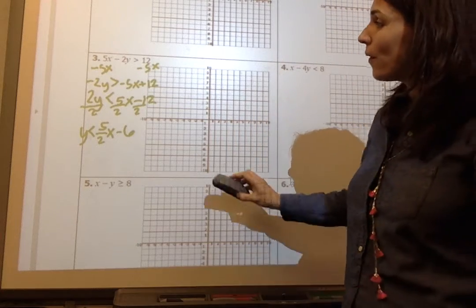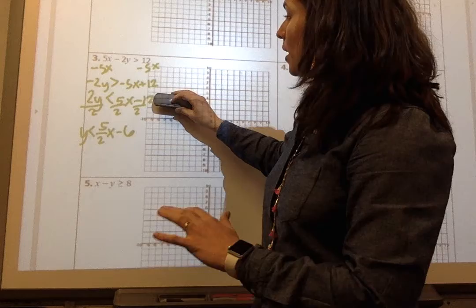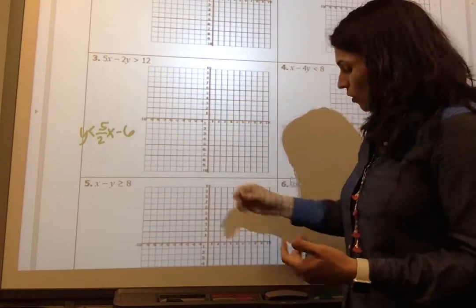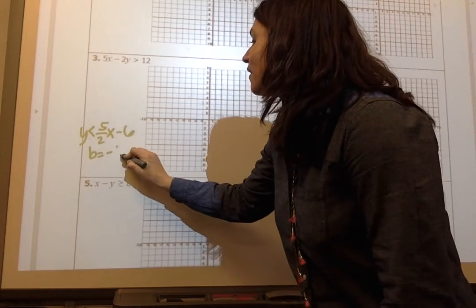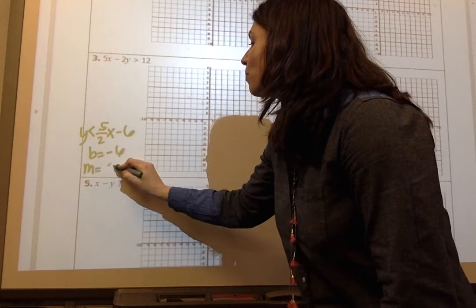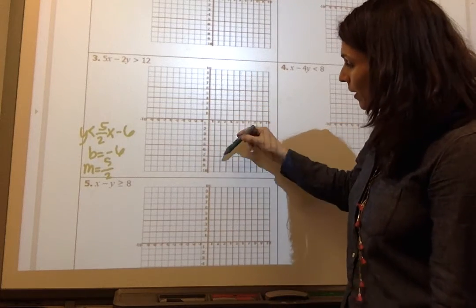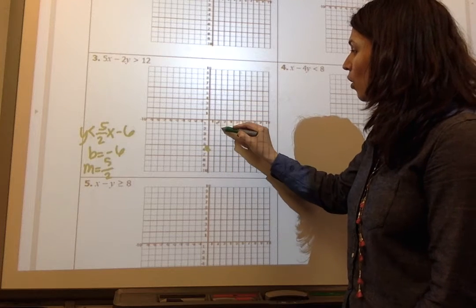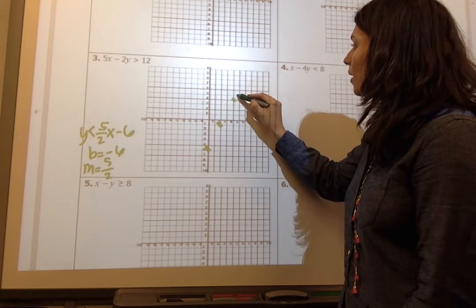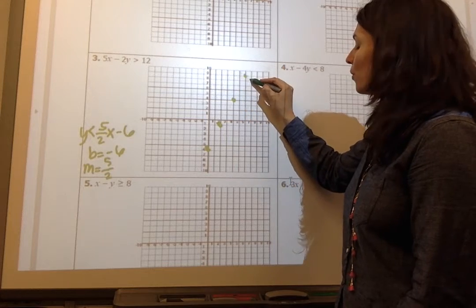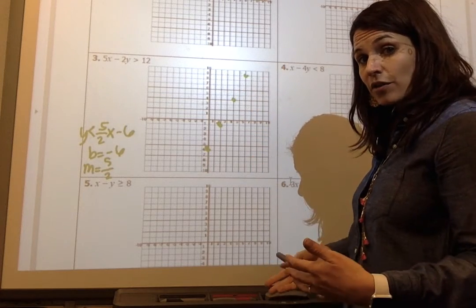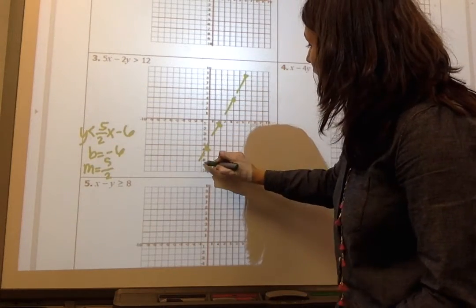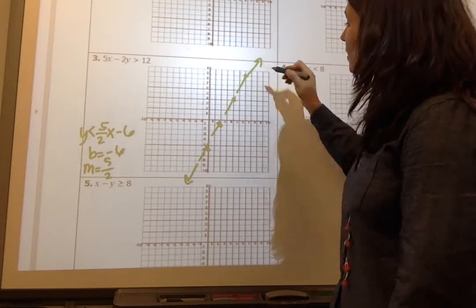So now, and I'm going to go ahead and erase this so you can pause and go back if you want your notes to match, but I'm just going to give myself some room. So now I can graph this. I know that my beginning point is negative 6, and I know that my slope is 5/2. So my beginning point is negative 6, and my slope is 5/2. So I'm going to go up 5, over 2, up 5, over 2, up 5, over 2. I see the pattern. Is it going to be solid or a dotted line? Because it's less than, it's a dotted line. Go all the way through the quadrants, arrows on both ends.